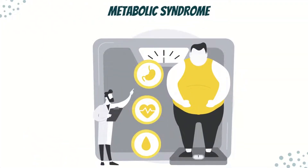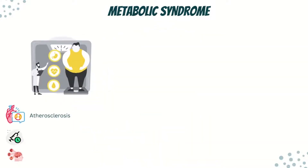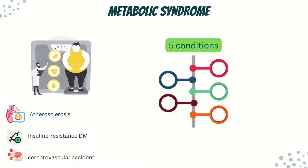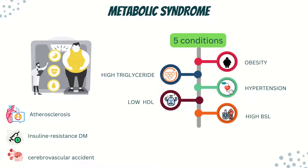Metabolic syndrome is a name we give to a group of conditions together. They raise your risk for heart disease, diabetes, and stroke. Five conditions make up this syndrome: a large waistline, high blood pressure, high blood sugar, a high level of triglycerides — a type of fat found in your blood — and a low level of HDL cholesterol, that is the good cholesterol.